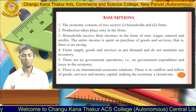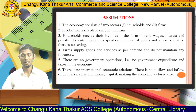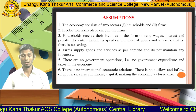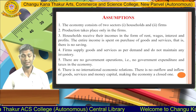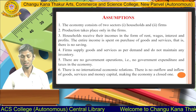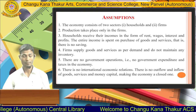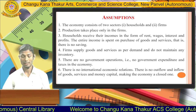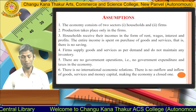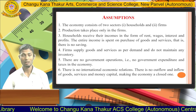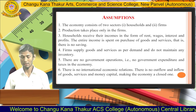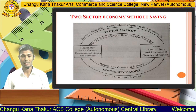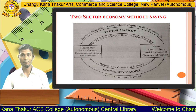Firms supply goods and services as per demand and do not maintain any inventory. There are no government operations — that is, no government expenditure and no taxes. There is no international economic relations, no outflow or inflow of goods, services, or money capital, making this a closed economy. On that basis, we will discuss the two sector economy with the help of a diagram.